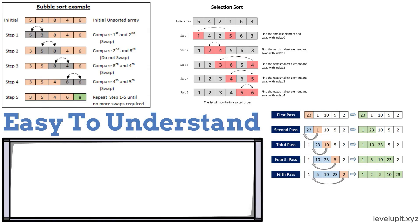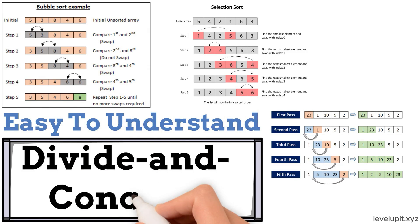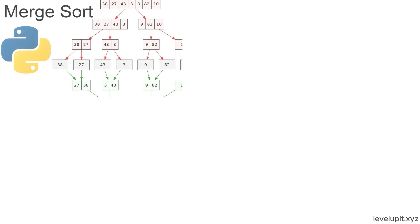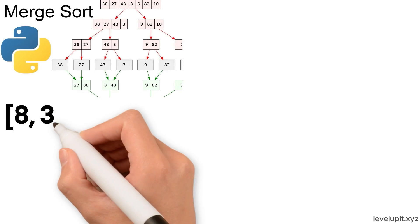For bigger data, divide-and-conquer methods shine. Merge sort splits the list into halves, sorts each half, then merges them. Take 8, 3, 5, 4.